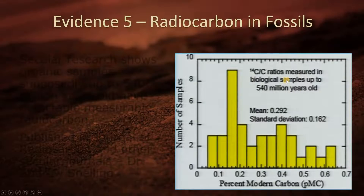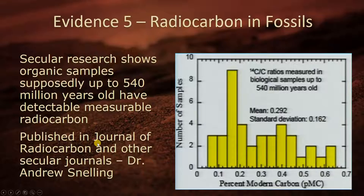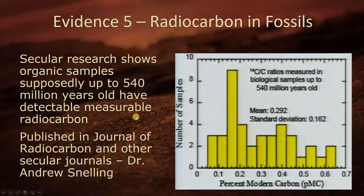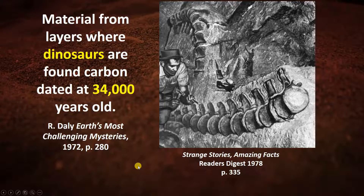But secular scientists have started finding biological samples with dates up to 540 million years that still have detectable, measurable radiocarbon. This has been published in secular journals like the Journal of Radiocarbon and others, according to Dr. Andrew Snelling. Even though these samples are supposedly 550 million years old, they still found detectable measurable carbon-14. There is also material from layers where dinosaurs are found with carbon dated at 34,000 years old. Most of the dinosaur fossil record occurred during the flood.